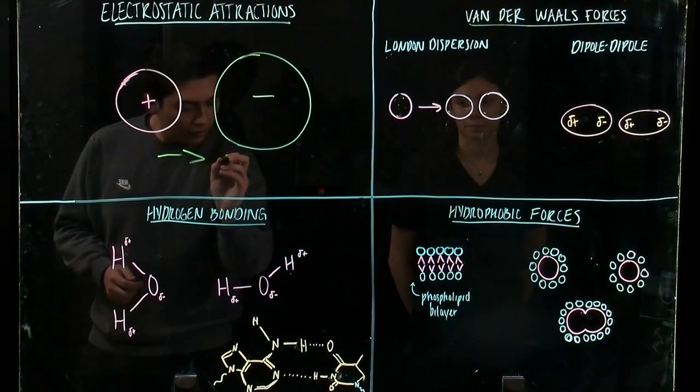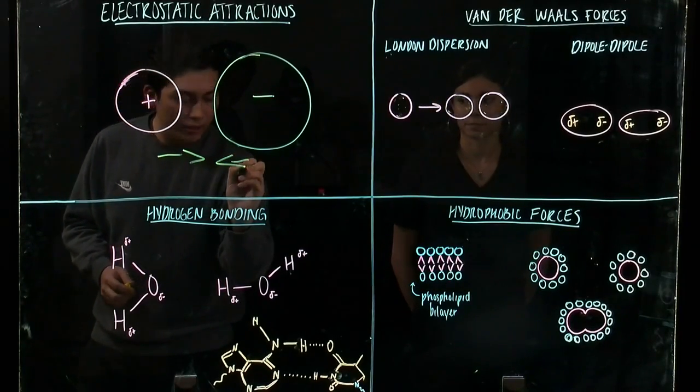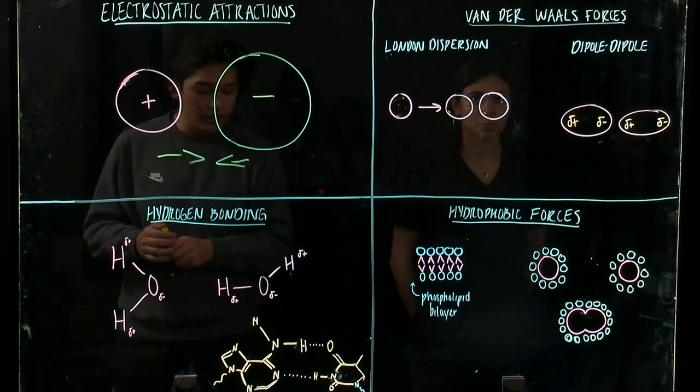Electrostatic attractions are an interaction between oppositely charged molecules or atoms that cause them to move towards each other.